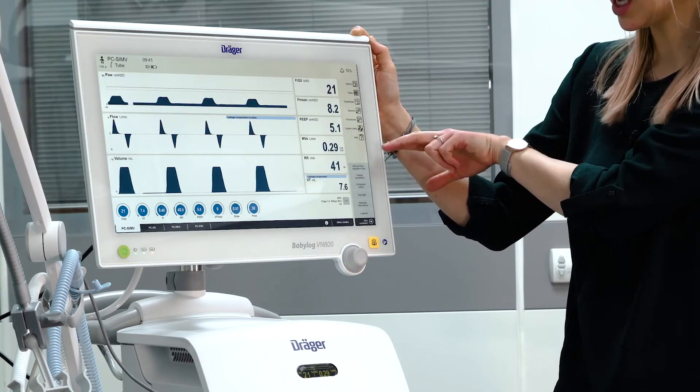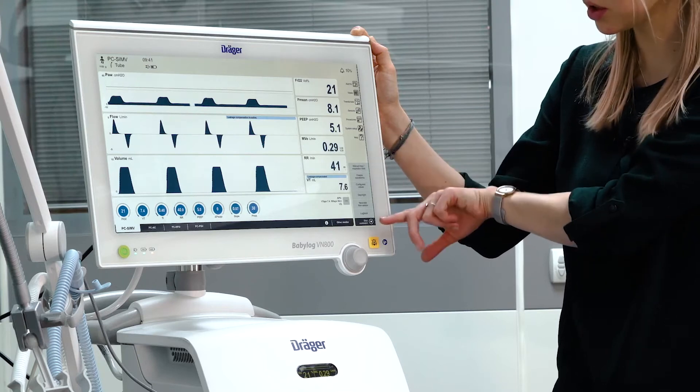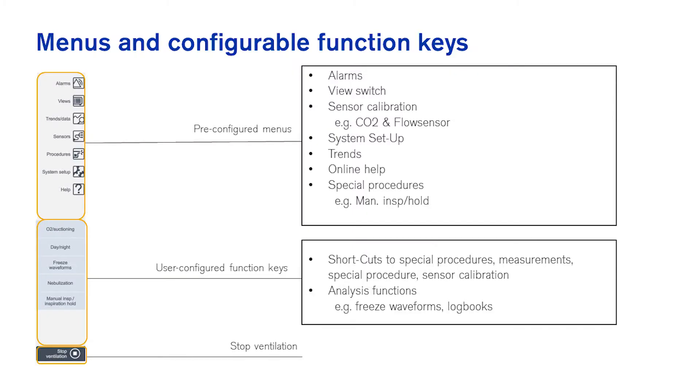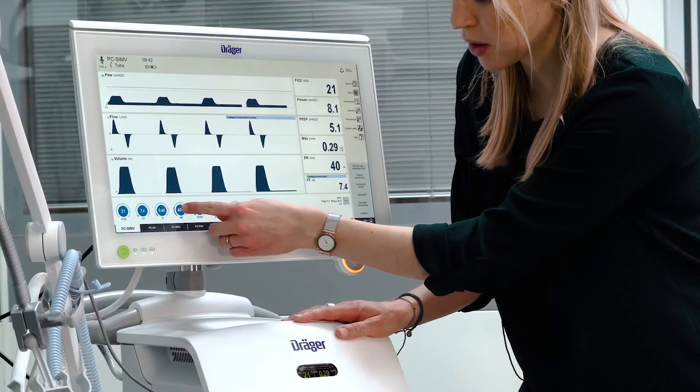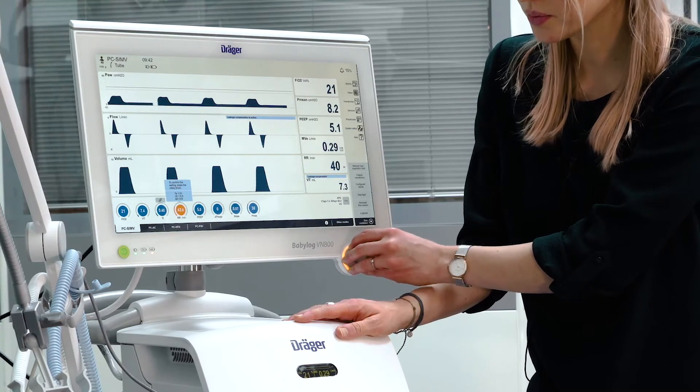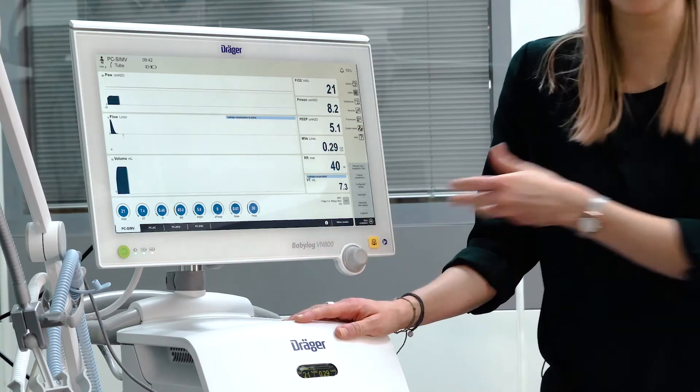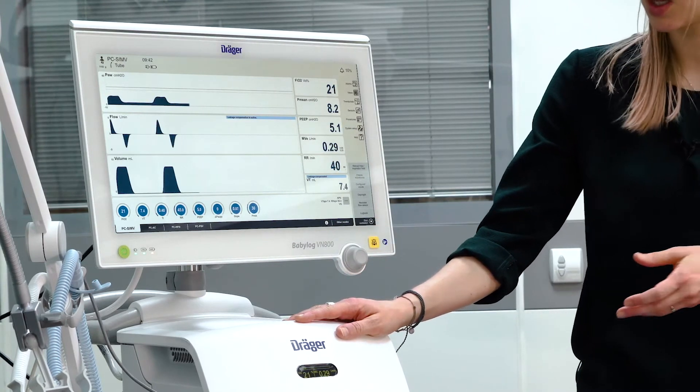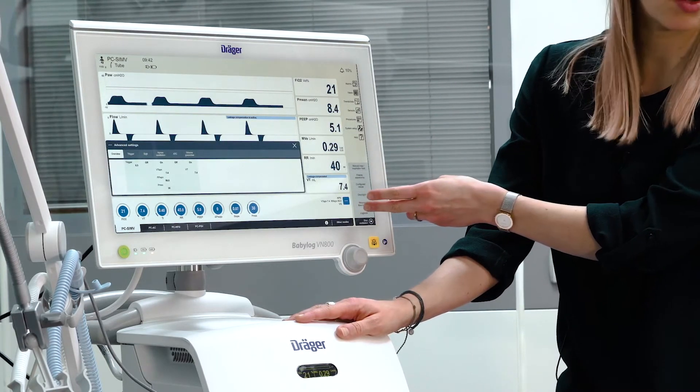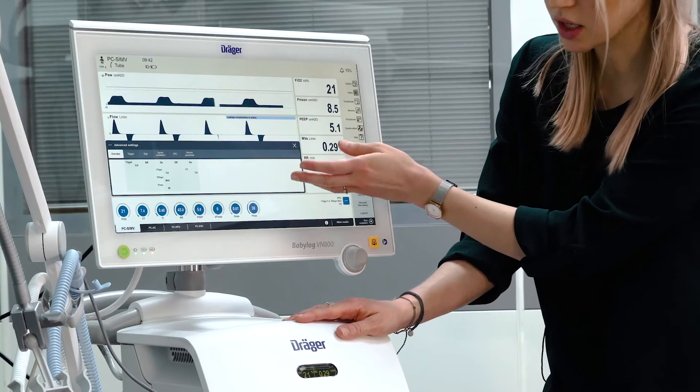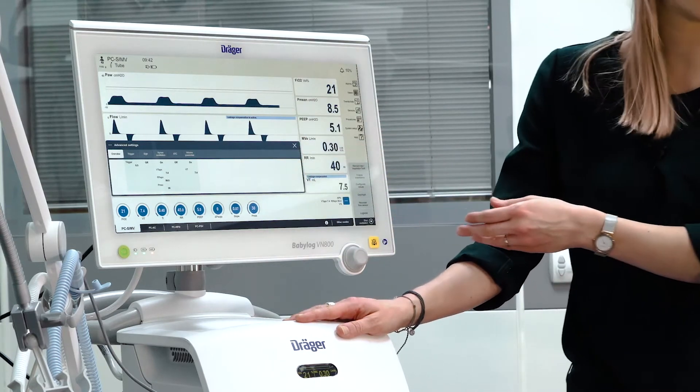In the right hand side, you can enter further submenus and you can find configurable function keys. Select the respective parameter and set it to the desired value. You can confirm by pressing the rotary knob. Via the three dots on the right hand side, you can enter the advanced settings and apply changes if necessary.